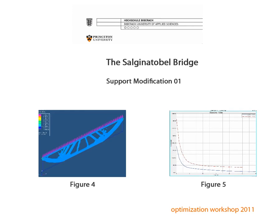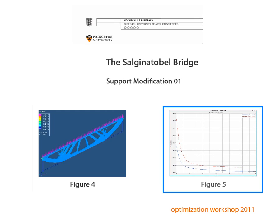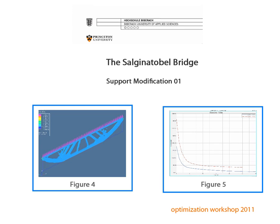Support modification 1 takes place. In Figure 4, the lower supports are being removed. The only supports kept are at the top of the bridge. In Figure 5, the graphs show the convergence of the compliance of the original model (blue line) and the modified model (red line), which converges to a higher compliance value, producing a design proposal of reduced efficiency.